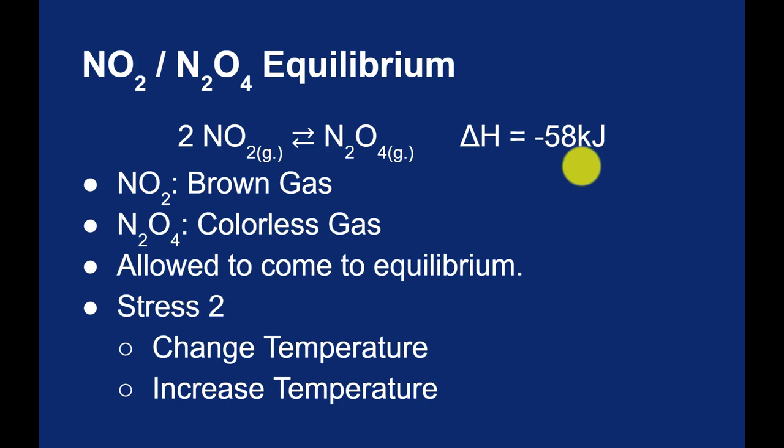Conversely, if we increase the temperature, then this equilibrium would shift to the endothermic process. So things would shift back to the left, making this brown NO2 gas. This is why smog is much more prevalent on really hot summer days in cities.